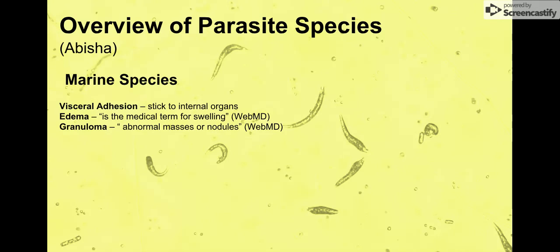They cause edema, which is the medical term for swelling, and they also cause granulomas, which are defined as abnormal masses or nodules — we'll see those later. So these are the effects that these parasitic nematodes can cause. There are four categories here; these are common ones, not all of the parasites.